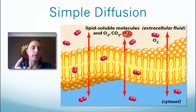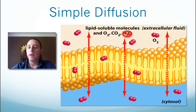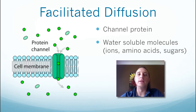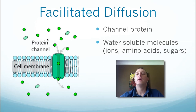Very small, uncharged, lipid-soluble molecules can pass through. But ions, though very small, are charged and cannot move between the membrane molecules. So what happens if you need to move larger molecules or water-soluble molecules through? The cell uses a method called facilitated diffusion. There are proteins embedded in the membrane — channel proteins — that basically form a hole within the membrane, allowing molecules to move through.